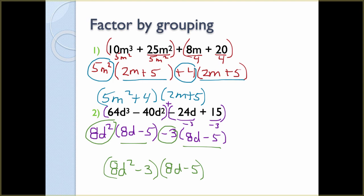So this is factoring by grouping: group the first two terms and the last two terms, find the GCF for each group. When you pull those out, make sure the parentheses remaining match. If they match, that's a factor group, and the GCFs you pulled out from the two groups form the second factor group.